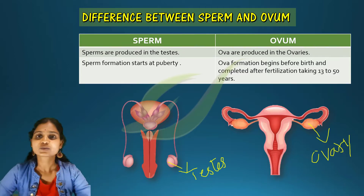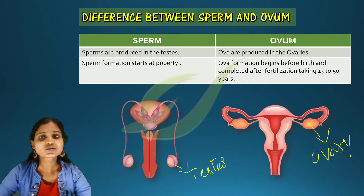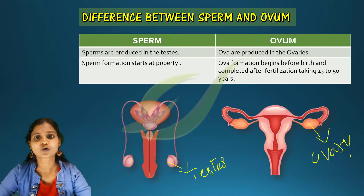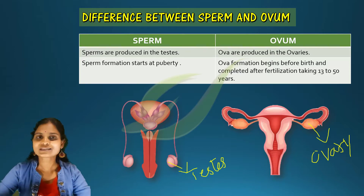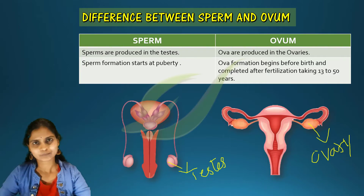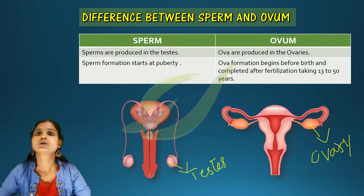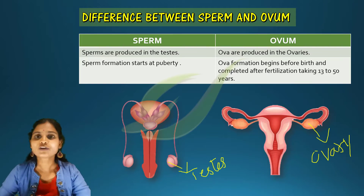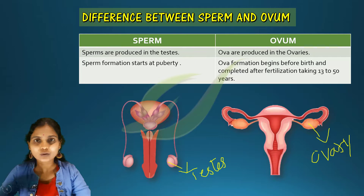Both sperm and ova are haploid in nature. Sperms are produced at the time of puberty — the puberty age for boys is around 12 years. Whereas in females, oogenesis starts before birth and it stops during 45 to 50 years, which we call the menopause stage.